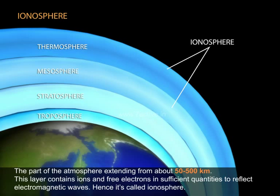Ionosphere. The part of the atmosphere extending from about 50 to 500 km. This layer contains ions and free electrons in sufficient quantities to reflect electromagnetic waves. Hence, it's called ionosphere.